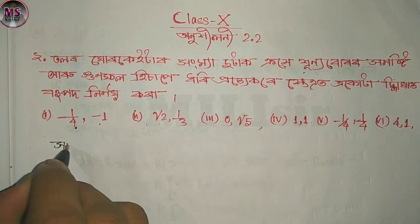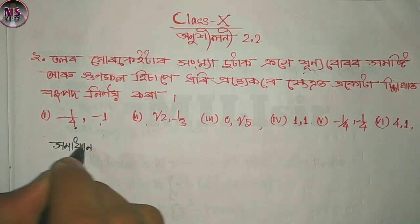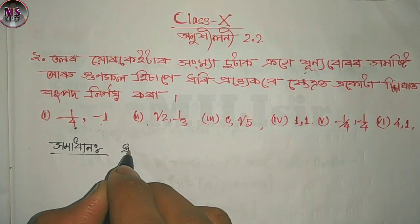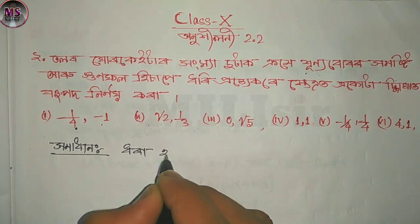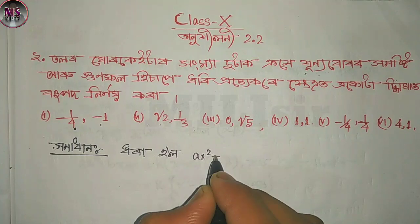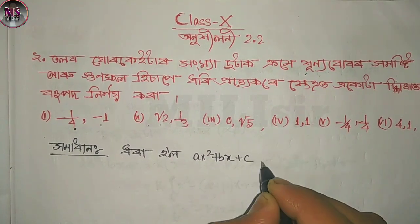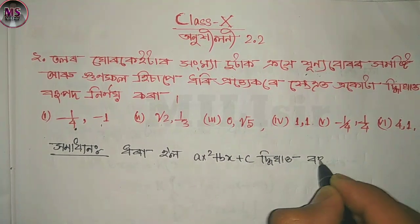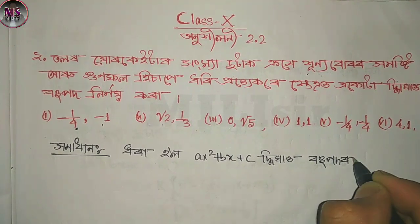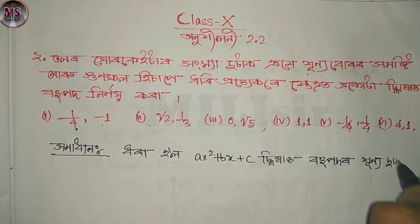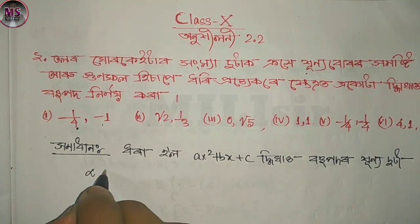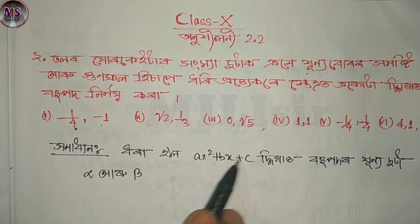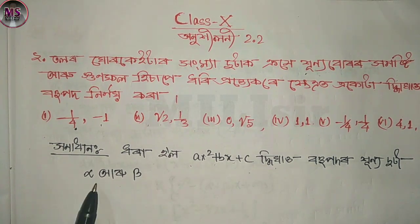So let's take some information. I will write the words. For a quadratic polynomial: a x squared plus b x plus c — where alpha and beta are the roots, so a x squared plus b x plus c has roots alpha and beta.